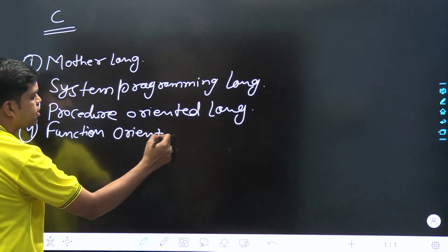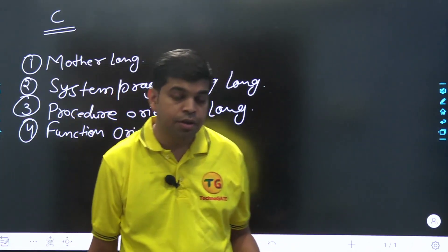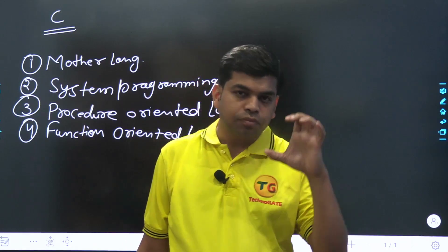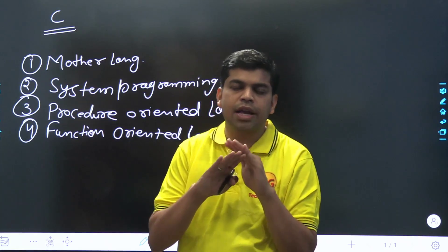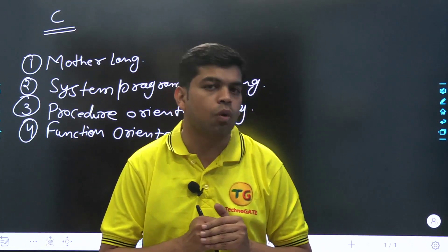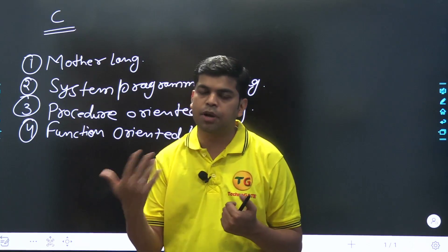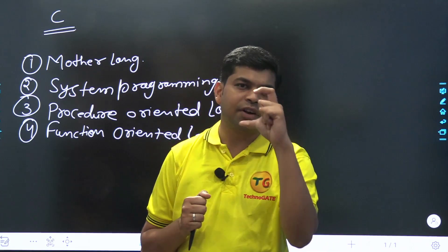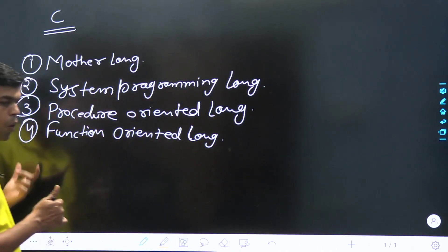Why is it called function-oriented programming? Because everything written in the program will be written inside a function — every code will be inside a function. In C language, we do not implement anything without a function. There is one important default function we must use in every C program: the main function. Other than that, there are user-defined functions we can create. But the main function is compulsory, so that's why it is called function-oriented language.